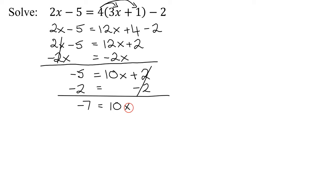And last step to get x by itself, I divide both sides by 10. These 10s here reduce. So I'm going to get x equals negative 7 tenths. So that is my answer. I have solved this linear equation.